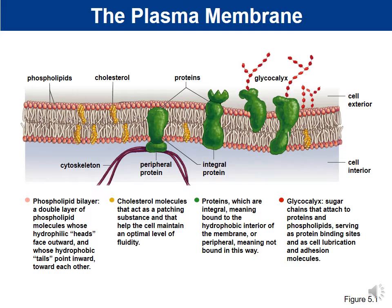Phospholipids are amphipathic — hydrophilic heads face inside and outside the cell where water is present, and hydrophobic fatty acid tails are shielded from water in the middle. The phospholipid bilayer is the main component and helps maintain the correct fluidity. Cholesterol also contributes to fluidity — it prevents the membrane from packing too tightly into a solid structure and prevents it from becoming too fluid. Cholesterol is very important in keeping the cell membrane at the correct fluidity.